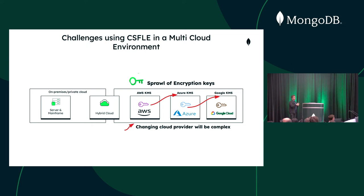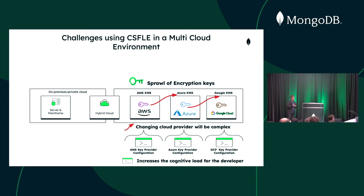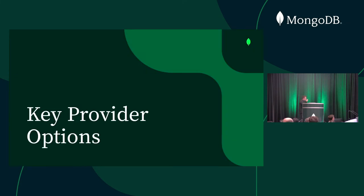That migration process is time-consuming and error-prone — if done incorrectly you can lose your data. Also, if you have workloads running in both AWS and GCP and need to encrypt data in both, how does your application know which key to use where? You need to build some kind of routing or key-lookup functionality to manage that, which adds complexity and increases cognitive load.